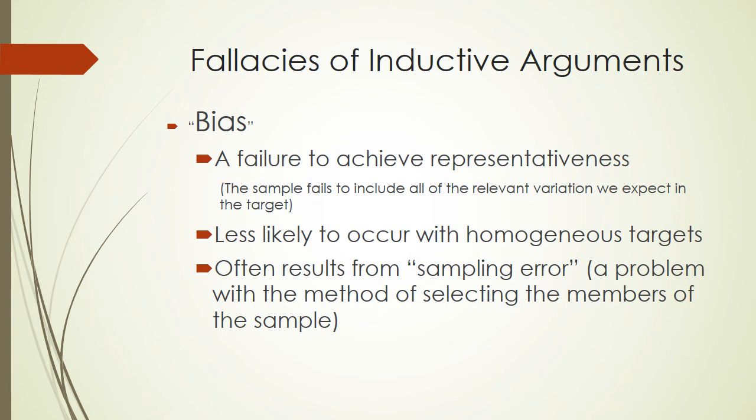Bias frequently results from sampling error — in other words, a problem with the method of selecting the members of the sample. For example, in quota sampling, we might neglect to understand that there's some important variation or characteristic in our target population, and so we might not represent it adequately in our sample population.